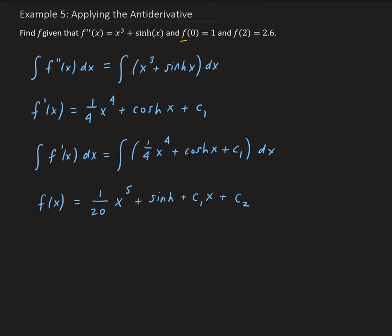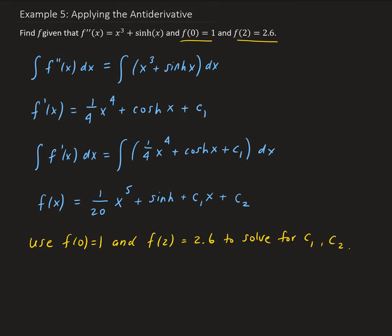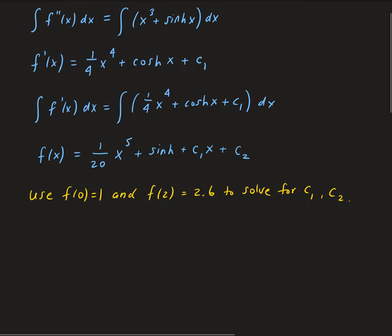Now we need to use our initial values to solve for C₁ and C₂. Looking at f of 0 equals 1: when we evaluate our general function at 0, substituting x = 0, we're going to get C₂, and f of 0 is equal to 1. So therefore, C₂ equals 1.